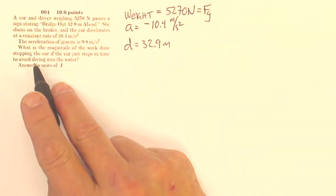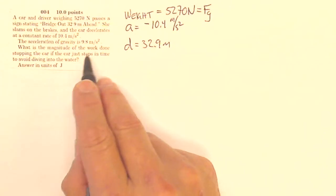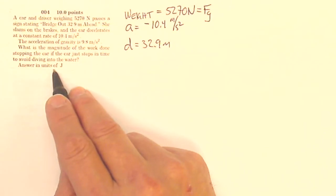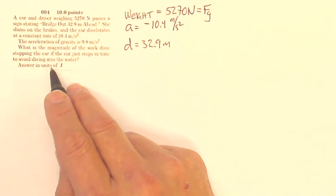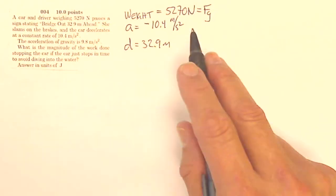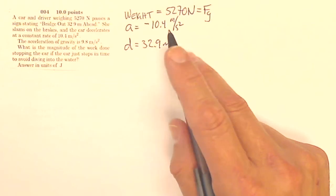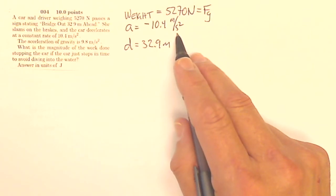So now, how do I figure out how much work is done stopping the car? Well, my work is going to be my force times my distance. My work is also going to be my change in energy. But I don't know my velocity, so I couldn't do one-half m v squared.